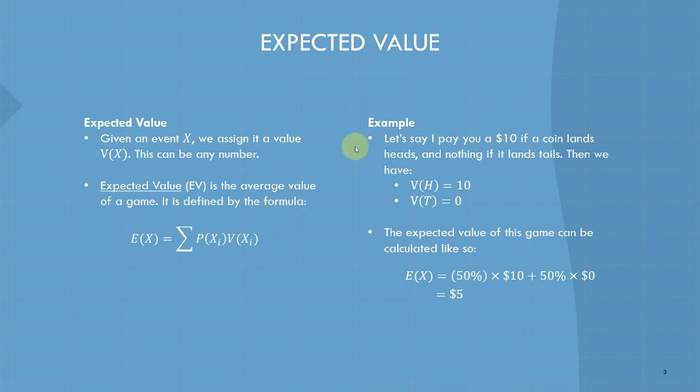Let's go back to our coin example, where I'll pay you $10 if a coin lands heads, and nothing if it lands tails. We have our value function: the value of heads is 10, the value of tails is 0. What is the expected value of this game? We can plug it into our formula. It's 50% chance times $10, plus another 50% chance of getting tails, and the $0 we get from that tails. That adds up to $5.